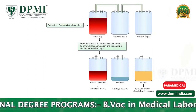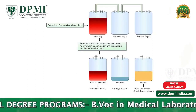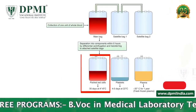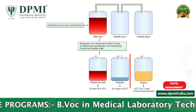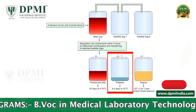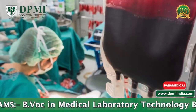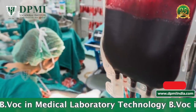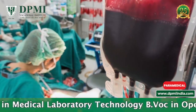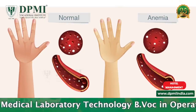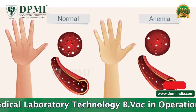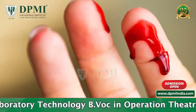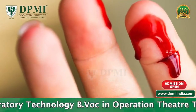Most commonly used blood components are red blood cells, plasma, and platelets. Blood transfusion is done in cases of surgery, injury, or in diseases like anemia, leukemia, and bleeding disorders.